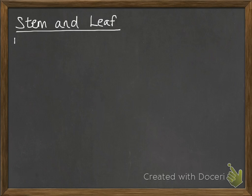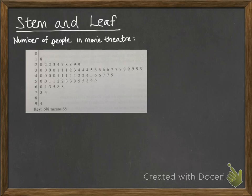Now, stem and leaf diagrams. I've got an example here for the number of people who were in a movie theatre on a number of occasions. The smallest we had in this movie theatre was eighteen. The largest was ninety-four.